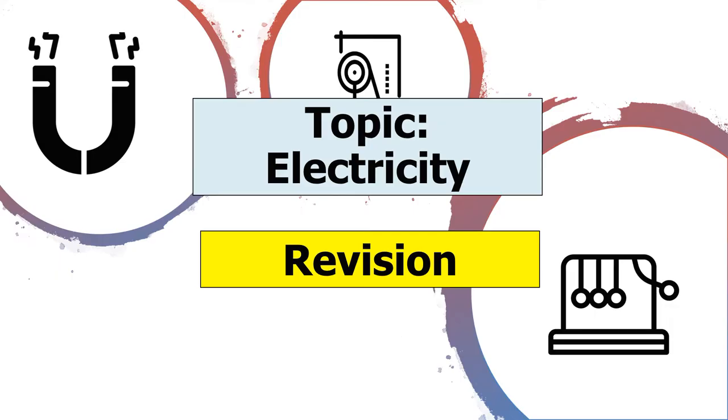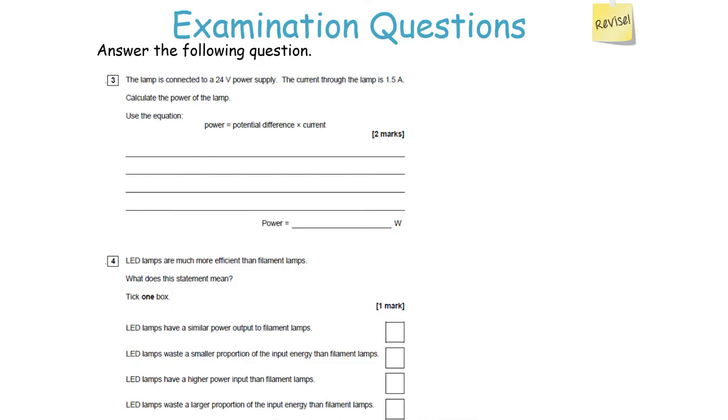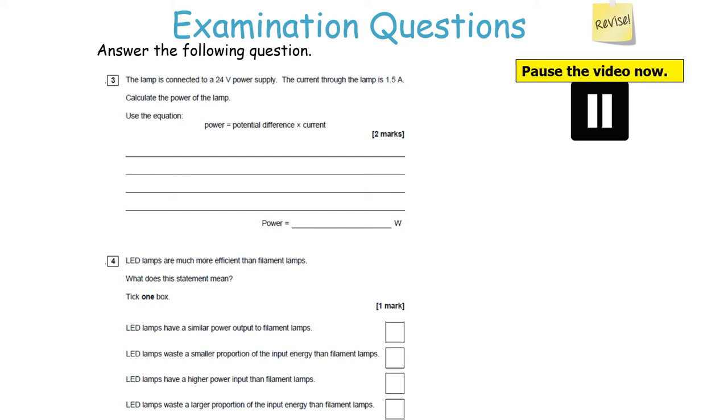Let's look at questions on electricity. A lamp is connected to a 24-volt power supply. The current through the lamp is 1.5 amps. Calculate the power of the lamp. Then, LED lamps are much more efficient than filament lamps — what does this mean? Power equals potential difference times current: 1.5 times 24 equals 36 watts. Make sure the answer looks sensible.